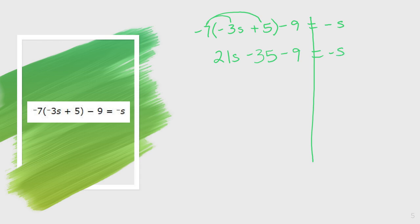I can still simplify more on my left side. I don't have any other variables, so I bring down my 21s. However, I can do negative 35 minus 9. When I do negative 35 minus 9, I get negative 44. And that is equal to negative s.